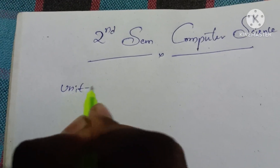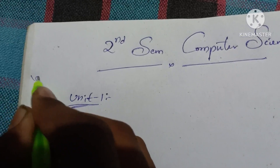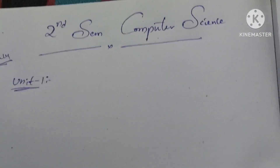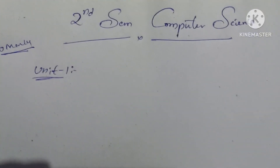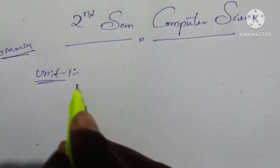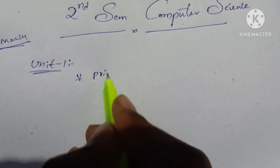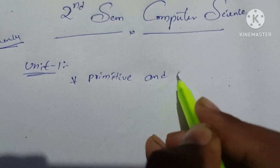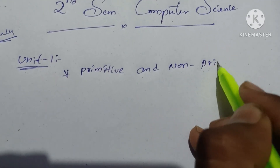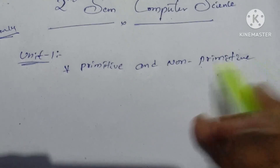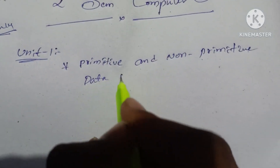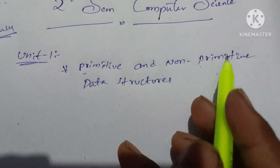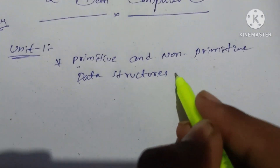What do you want to do with the first unit? The first unit's main question is: Explain primitive and non-primitive data structures. This is a very important question in the second semester. Explain primitive and non-primitive data structures with examples.